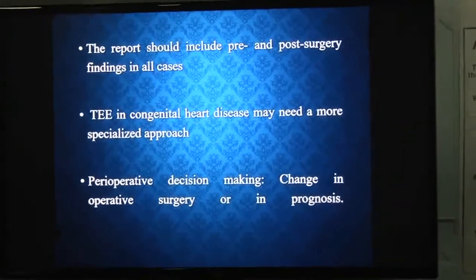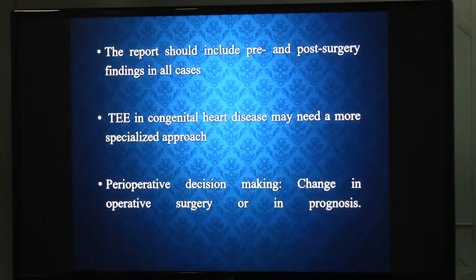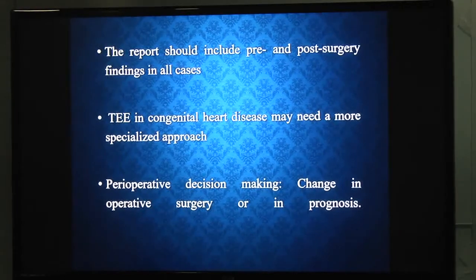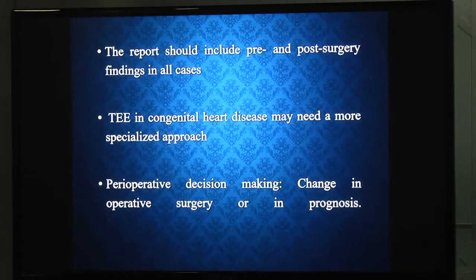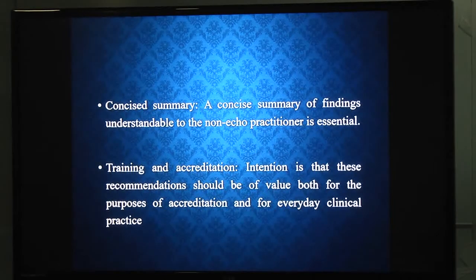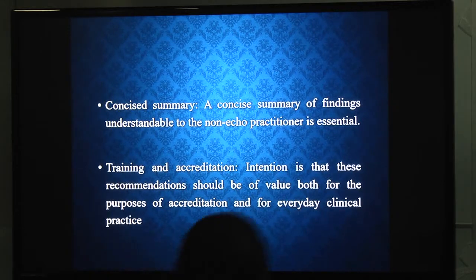The TEE report should include pre- and post-surgical findings. Regarding congenital heart disease, it needs a more specialized report. It should help in perioperative decision-making — any change in operative surgery or prognosis should be mentioned. It includes a concise summary of findings understandable to non-echo practitioners, and it also includes training and accreditation details such as the EACTA training and accreditation process.